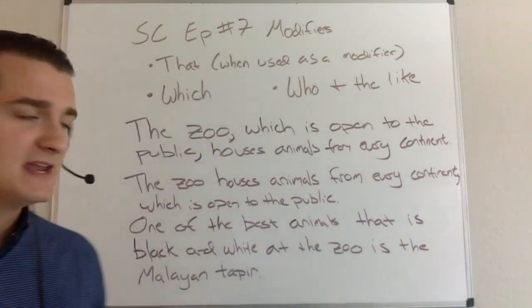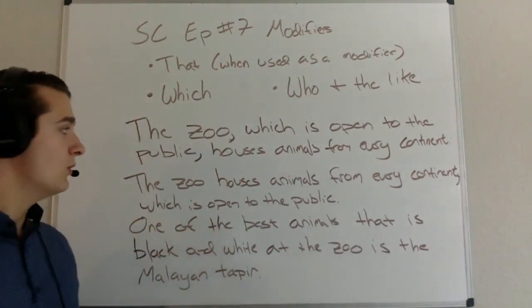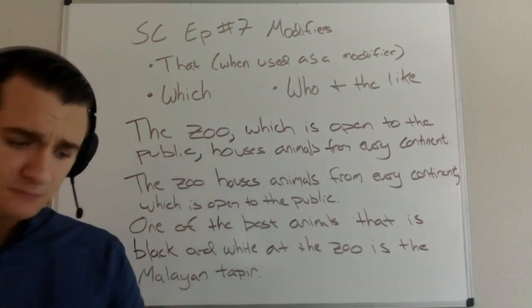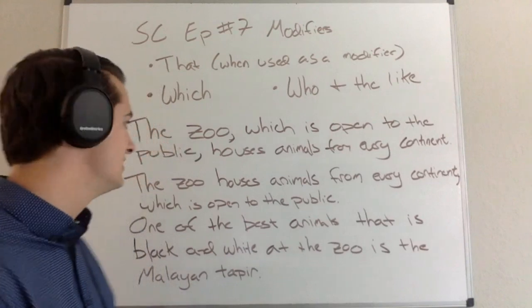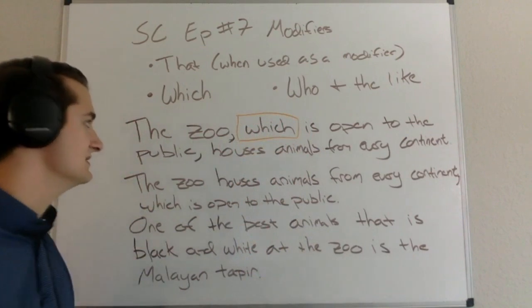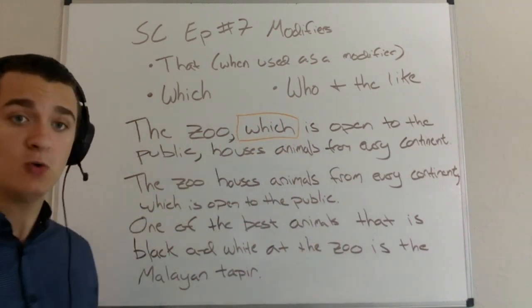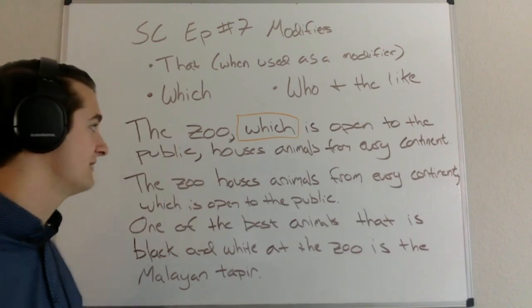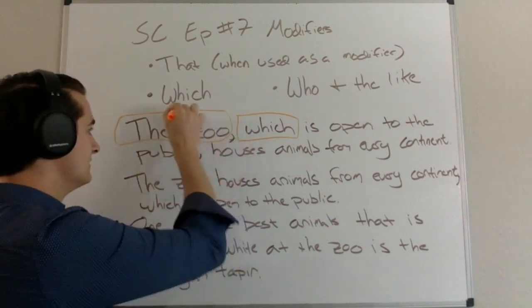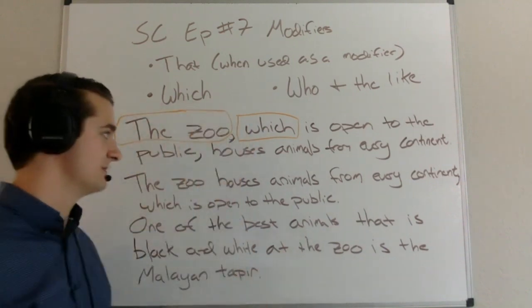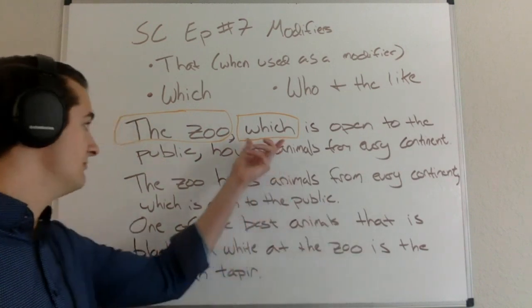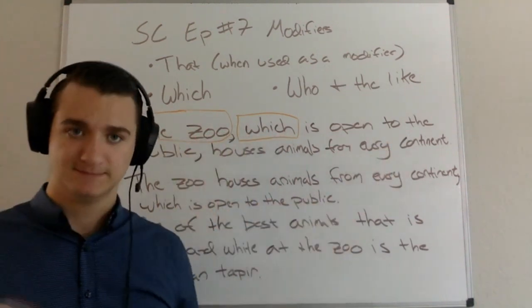The first example is: 'The zoo, which is open to the public, houses animals from every continent.' I notice I have the word 'which.' The first thing I'm going to do is identify what 'which' is modifying. 'Which is open to the public' — what is open to the public? The zoo. 'The zoo, which is open to the public' — the zoo is open to the public and houses animals from every continent. That works great. It's very clear that 'which' modifies the zoo.